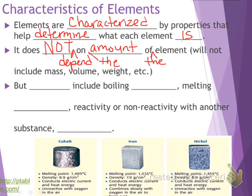It will not include mass, volume, or weight. That's not how we characterize these elements. But it does include the boiling point, the melting point, reactivity or non-reactivity with another substance, meaning if you mix it together, is it going to explode, or is it going to fizz, or is it going to do nothing? Okay. And density. Some of the characteristics that we use to determine what each element is. But we don't use mass or volume or weight.